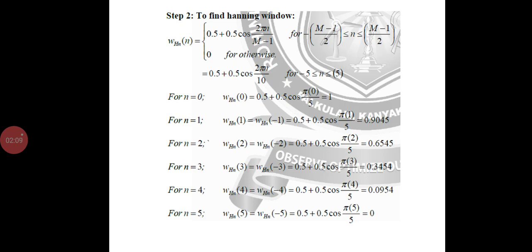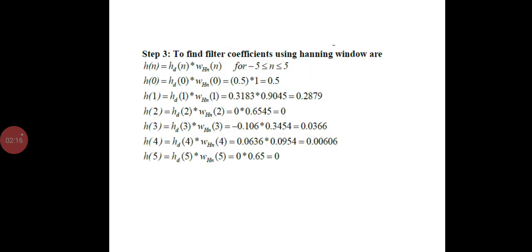Step 2: we are finding the hamming window windowing function by using the particular formula, and we substitute n=0 to 5 and find all the values. Step 3: we find the filter coefficient using the hamming window.